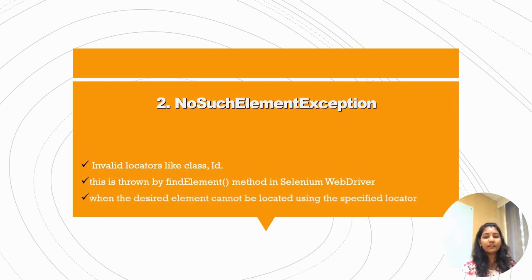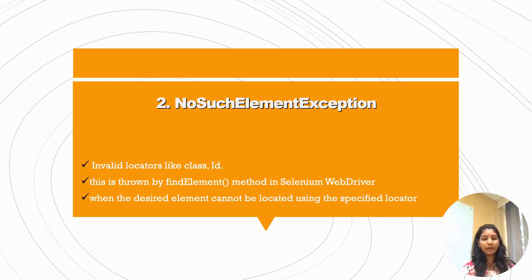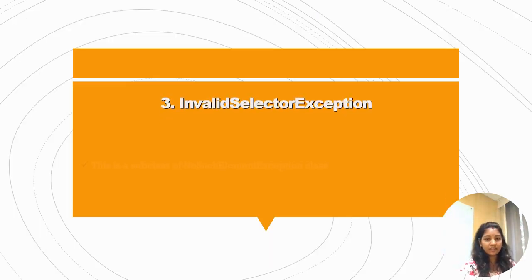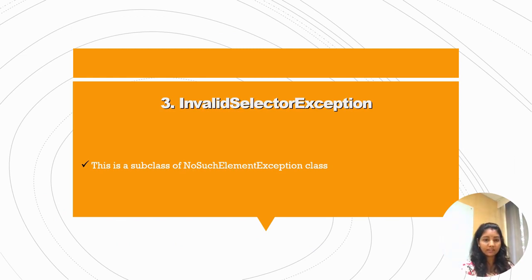NoSuchElementException is raised when the desired element cannot be located using the specified locator. You are trying to reach that element on the page but are not able to locate it because you are passing an invalid class or invalid ID. It looks like 'NoSuchElementException' in the output.